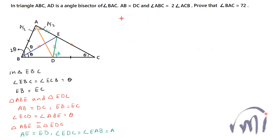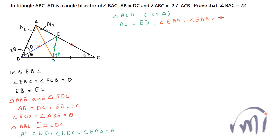Now in triangle AED, this is an isosceles triangle where side AE is equal to side ED. That means their opposite angles are also equal. So angle EAD equals angle EDA, and both equal A/2 — because we know angle EAD is equal to A/2. So this angle is also equal to A/2.